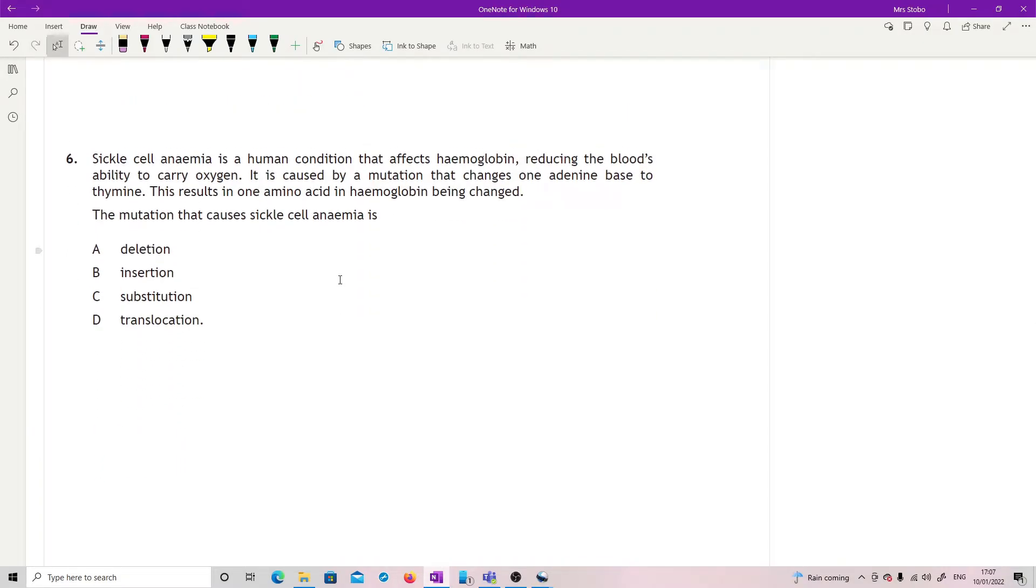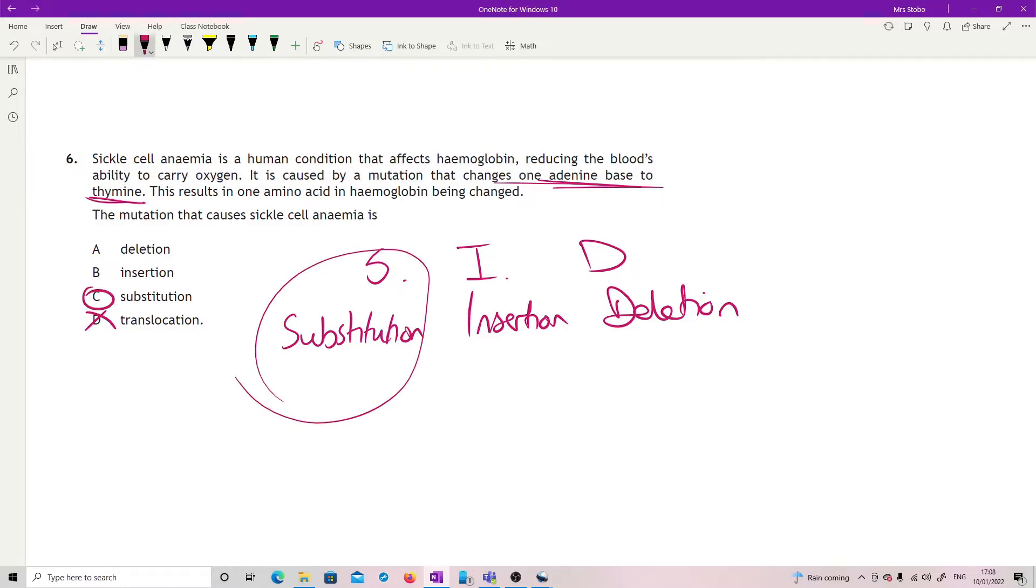Sickle cell anemia is a human condition that affects hemoglobin, reducing the body's ability to carry oxygen. It's caused by a mutation that changes one adenine base to thymine. This results in one amino acid in hemoglobin being changed. The mutation that causes sickle cell anemia is - get rid of translocation straight away because we are looking at a change of one base. There are only three different ones that are potentially in the running for this as single mutations: substitution, insertion, and deletion. Changes one adenine base to thymine - take one out, swap in another. It has got to be substitution. Also the fact it only results in one amino acid being changed tells you it cannot be these ones because these ones are frameshift, changing everything downstream of where you've done the damage.